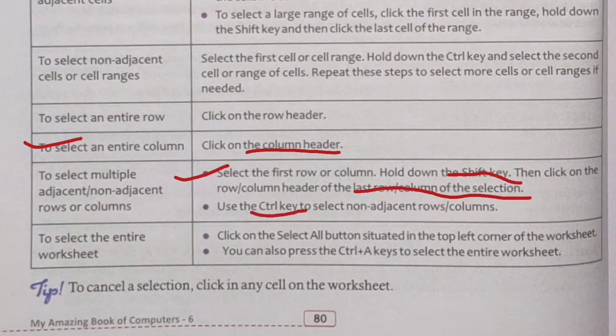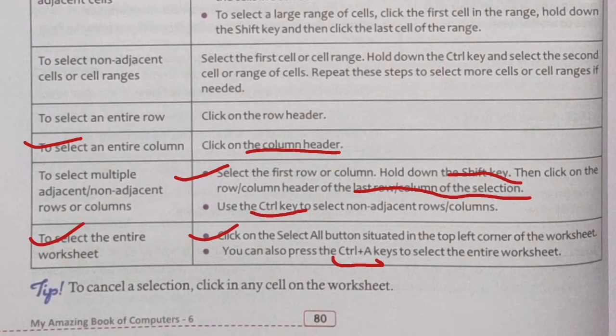To select the entire worksheet, click the Select All button situated in the top-left corner of the worksheet. The keyboard shortcut is Ctrl+A.